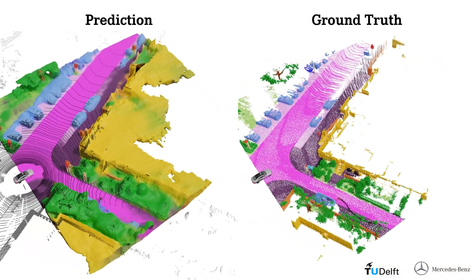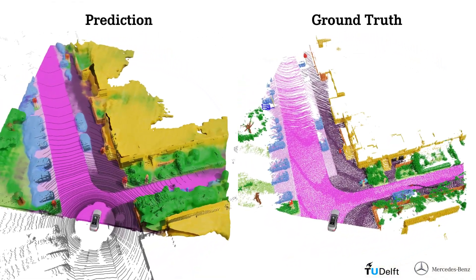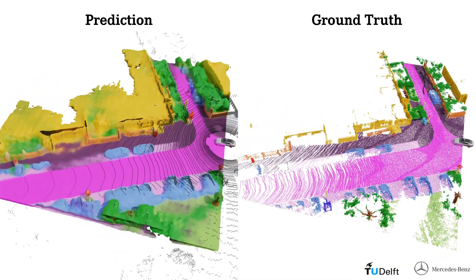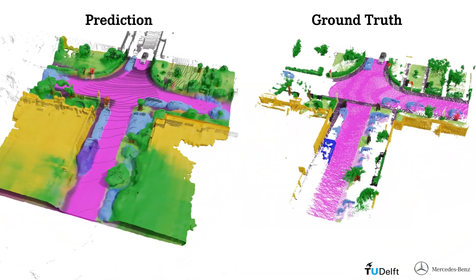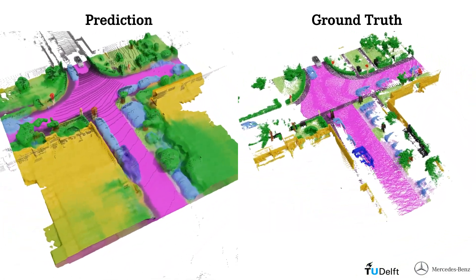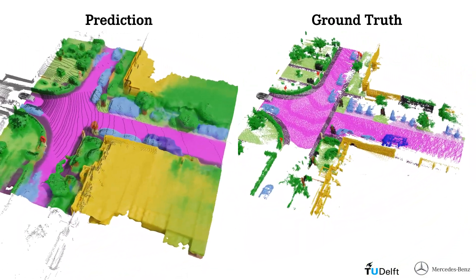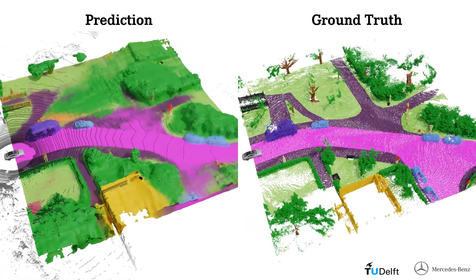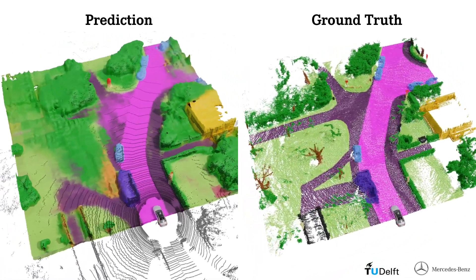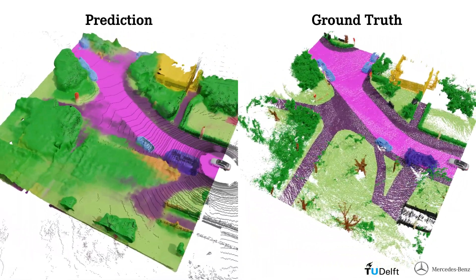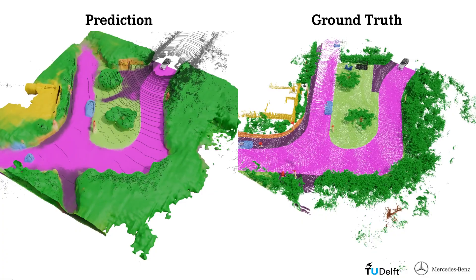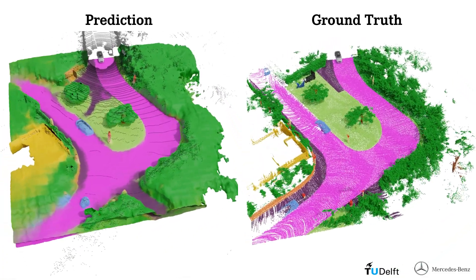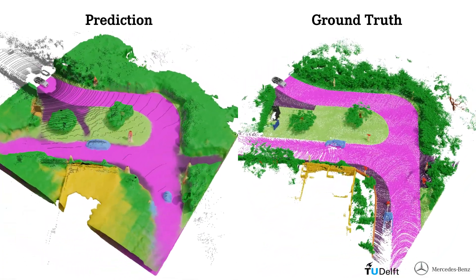We compare prediction and ground truth on scenes from the validation set. We see that the completion function is able to infer information about hidden regions from context and experience. For example, streets and sidewalks are reasonably continued through completely occluded regions.